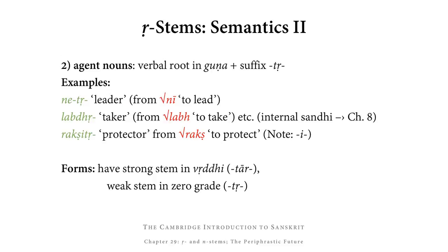By far the bigger group of R-stems are so-called agent nouns — nouns that talk about someone who does something, such as teacher, baker, leader, and so on. These are formed by taking a verbal root in guṇa and adding the suffix TR. So, for example, on the basis of nī (to lead) we get netṛ meaning leader; on the basis of labh (to take) we get labdhṛ, a taker — the internal sandhi in that is explained in chapter 8. Or from rakṣ (to protect) we get rakṣitṛ, protector.